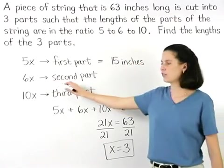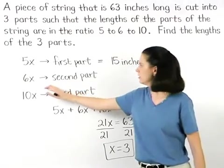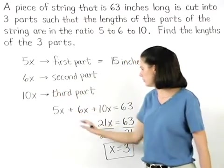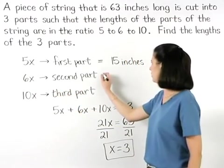And the length of the second part of the string, 6x, is 6 times 3, or 18 inches.